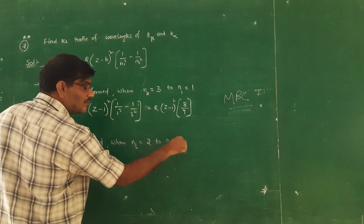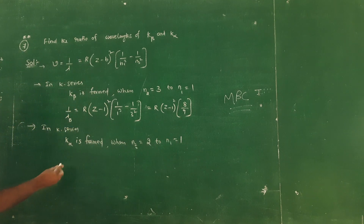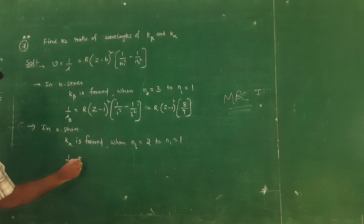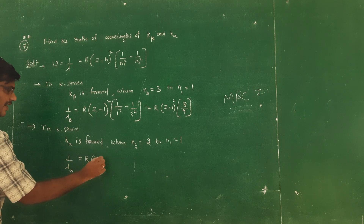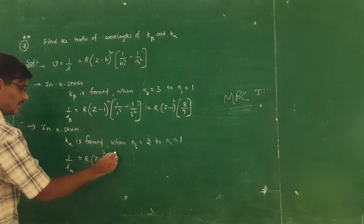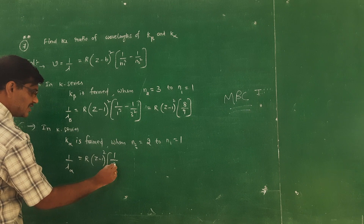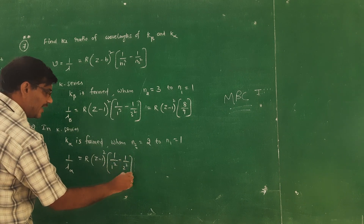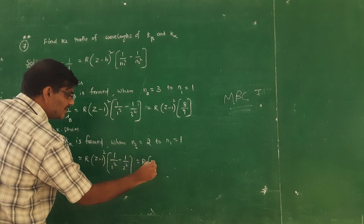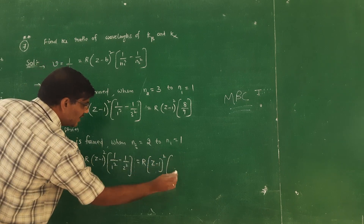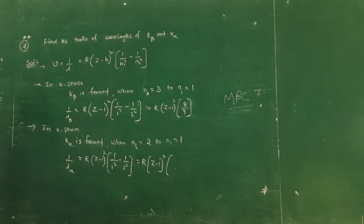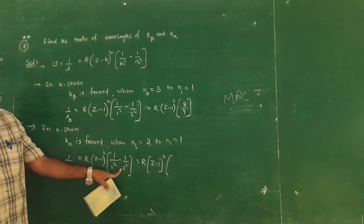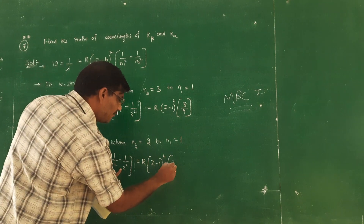N1 value: 1. So 1 by lambda alpha is equal to R into Z minus 1 whole square into 1 by 1 square minus 1 by 2 square. R into Z minus 1 whole square into 1 minus 1 by 4, which equals 3 by 4.